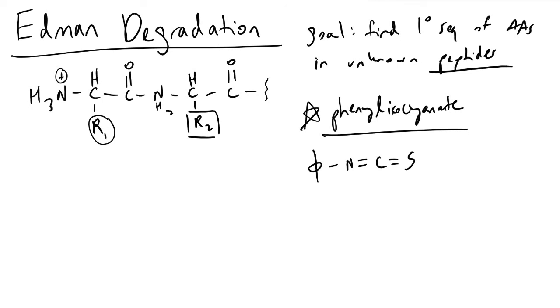The first thing that we will do in Edman degradation is make our solution basic. We're going to raise the pH of the solution in such a way that this terminal amino protein group here will lose its positive formal charge. This will exist now as an NH2 group with a lone pair of electrons, which is very important.